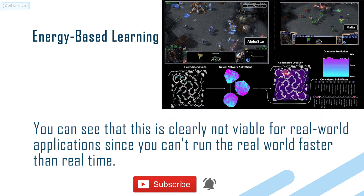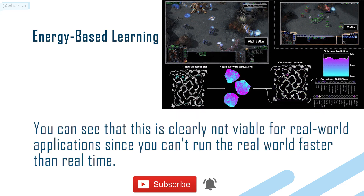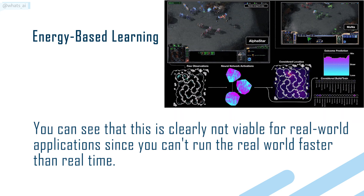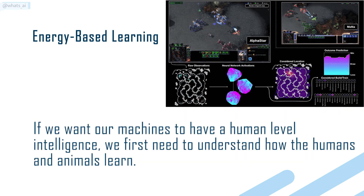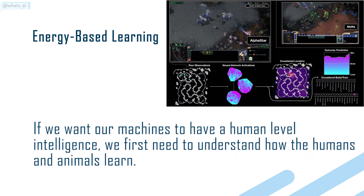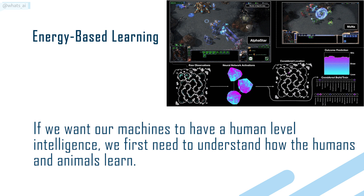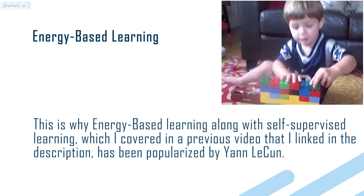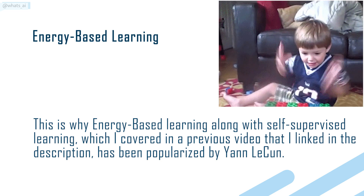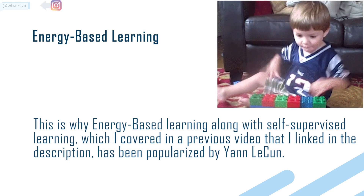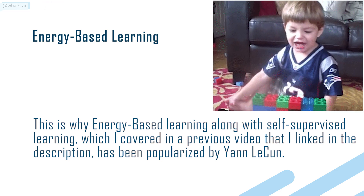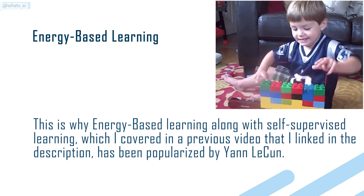You can see that this is clearly not viable for real-world applications, since you can't run the real world faster than real-time. If you want our machines to have human-level intelligence, we first need to understand how humans and animals learn. This is why energy-based learning, along with self-supervised learning, which I covered in a previous video linked in the description, has been popularized by Yann LeCun.